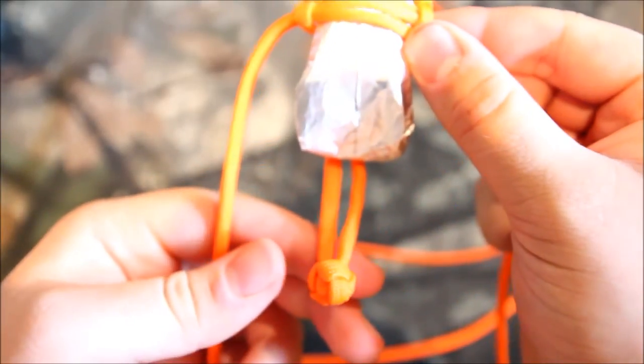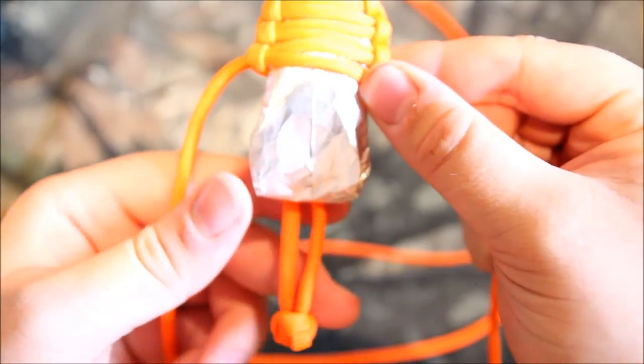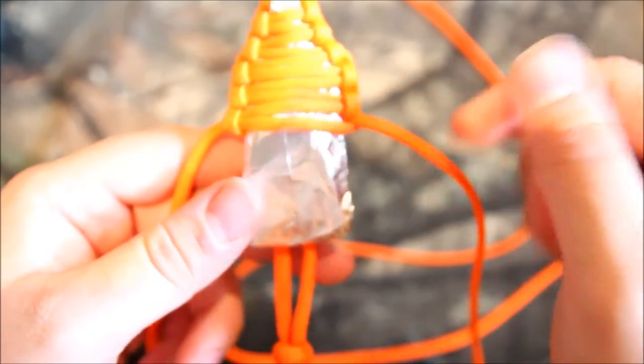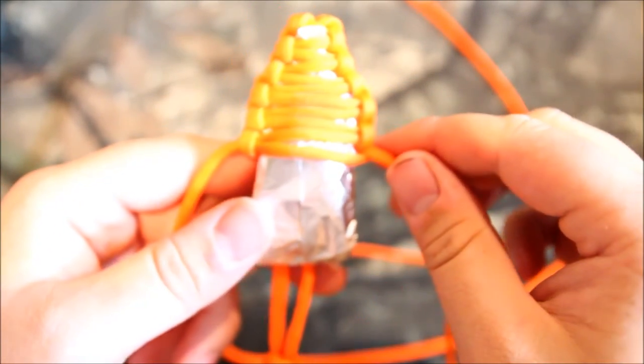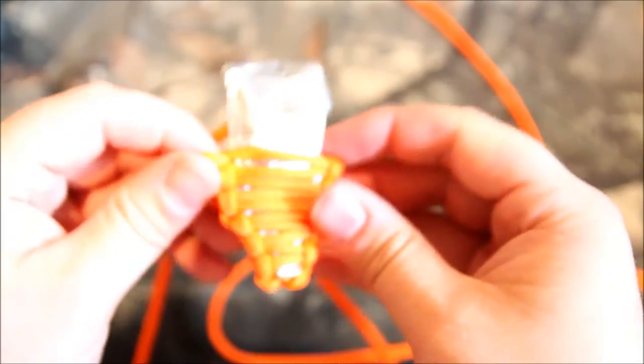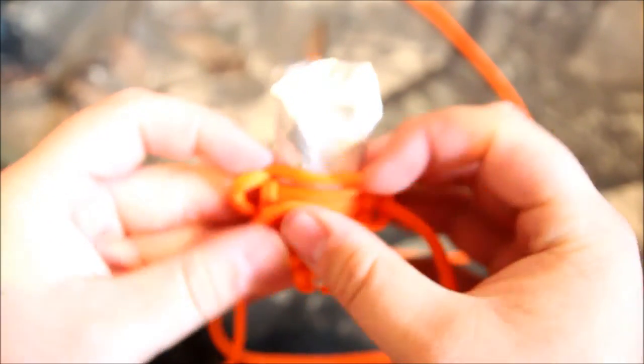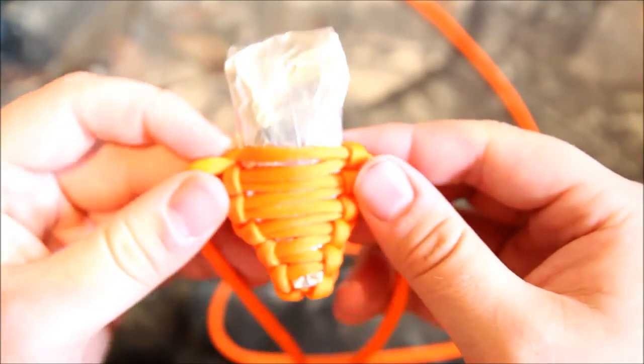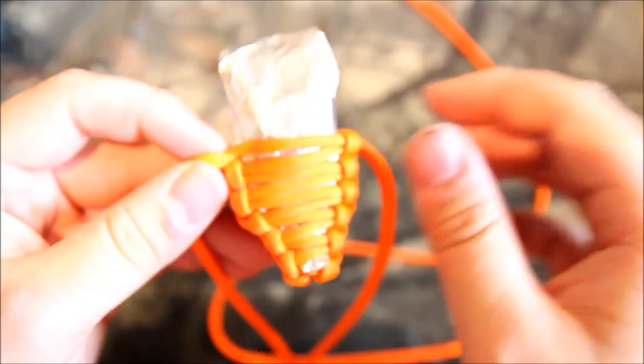And you just work it all the way down, keeping it nice and tight. As you can see here, I have a little bit too much on the end, normally this needs to be down a little bit. But run over it once, and then you'll turn it around, run over it once more. It's slightly bigger than the normal paracord grenade.